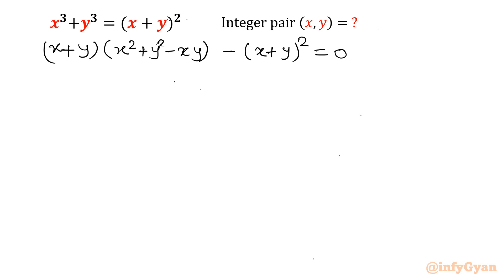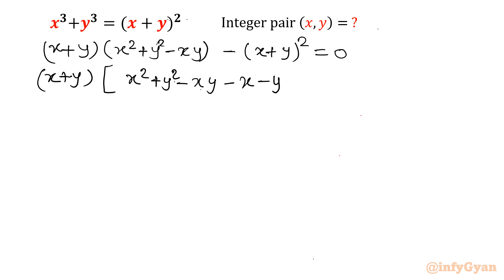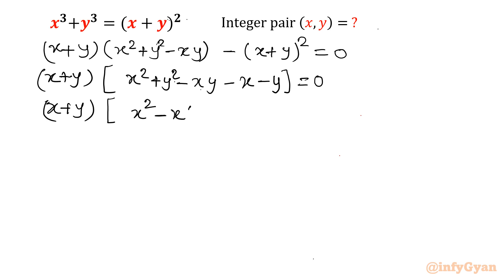Now you can see x plus y, x plus y whole square — so I will take x plus y common. What is left? x² plus y² minus xy minus x minus y is equal to 0. So that bracket would be written as x² minus xy plus 1.